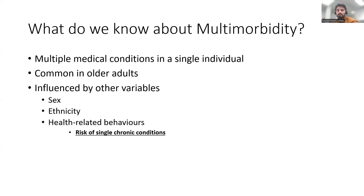Other evidence suggests that it is often more prevalent in those of lower socioeconomic status. It may also be influenced by other variables such as sex, ethnicity, and several health-related behaviors. The coexistence of two or more chronic conditions gives rise to multimorbidity — including physical non-communicable diseases of long duration such as cardiovascular disease or cancer, mental health conditions such as mood disorder or dementia, or infectious diseases of long duration such as HIV or hepatitis C.